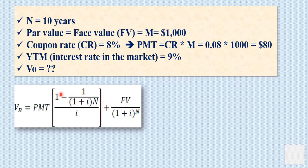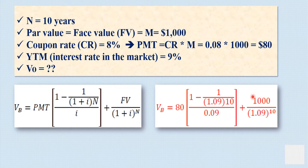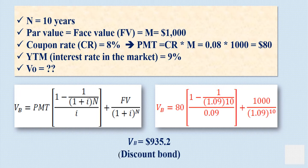Let's solve this equation. The payment is $80. The formula becomes: 80 × [1 − 1/(1.09)^10] / 0.09, plus $1,000 / (1.09)^10. Solving this equation gives us an answer equal to $935.20. This is a discount bond because it is selling below par value, below $1,000.